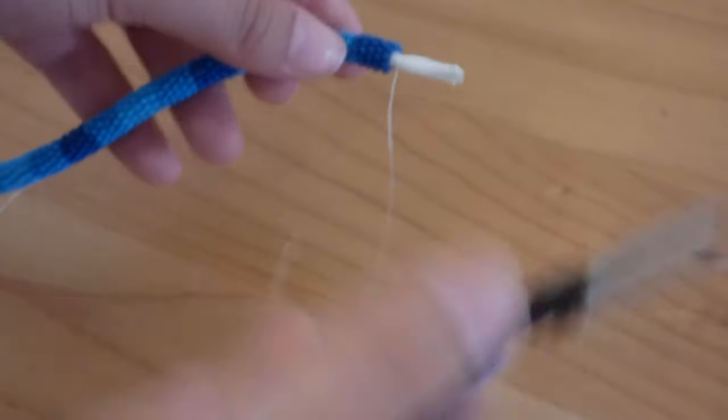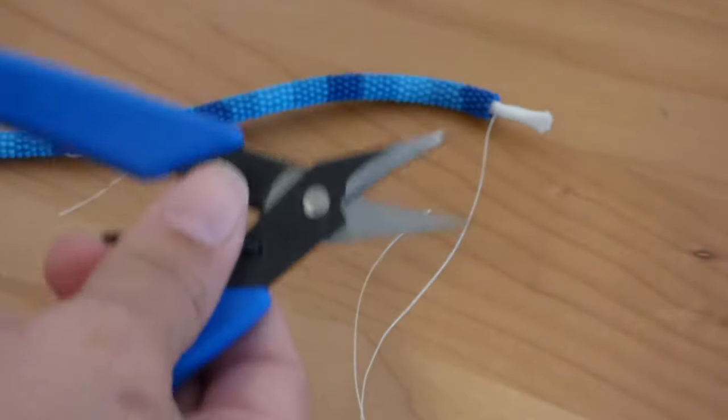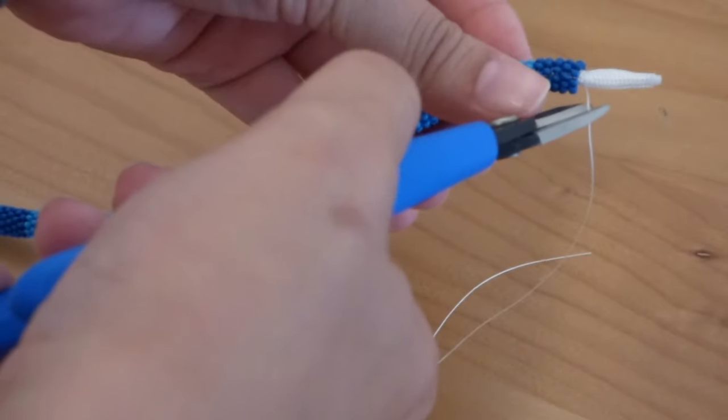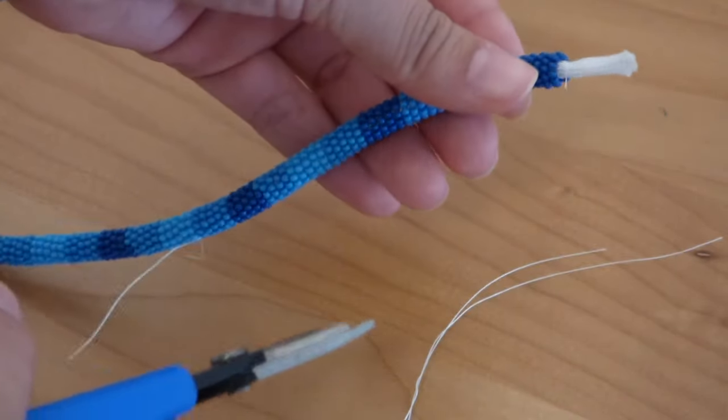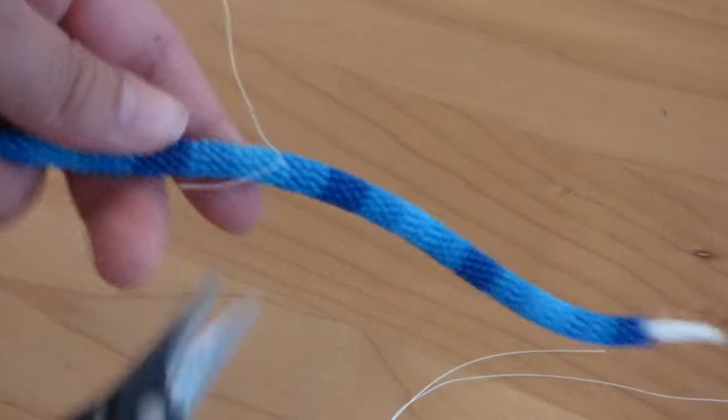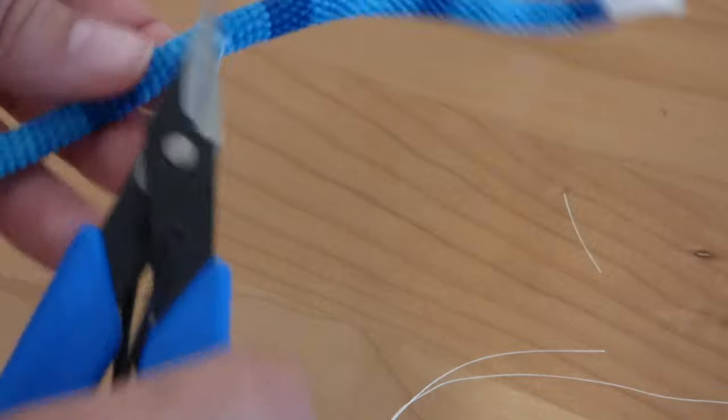Then I just take some scissors. I have these I got from Amazon. I use them to cut paracord and fireline, and they're great. And so you're just going to cut off a little bit so you only leave a small amount. And then if you had to tie more thread on, you can cut those ends as well.